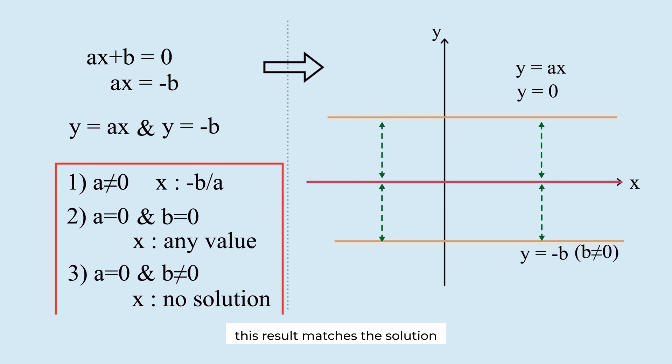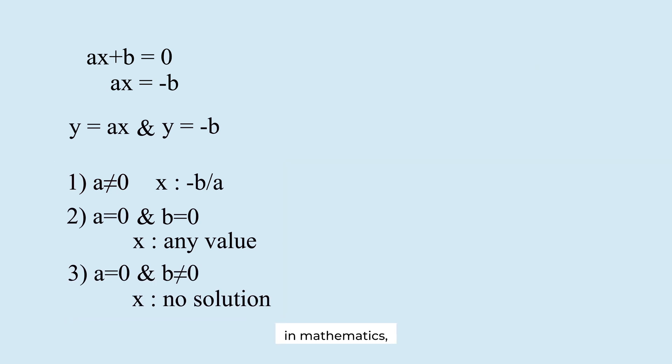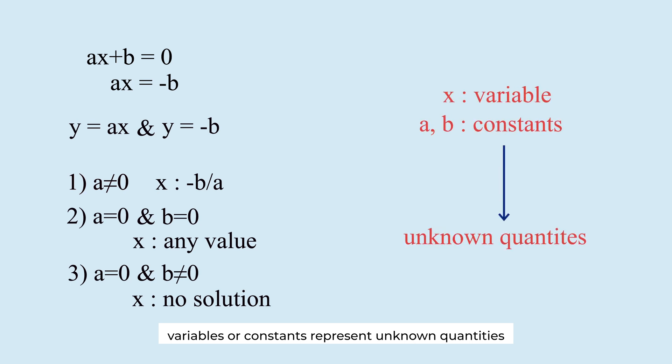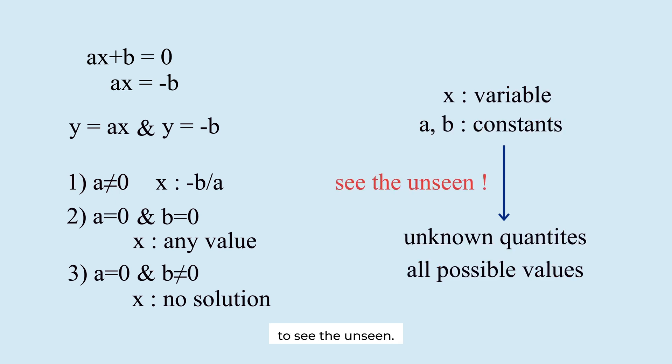This result matches the solution we derived algebraically. In mathematics, variables or constants represent unknown quantities that cover all possible values unless conditions are given. Don't just see what's visible. Use mathematics to see the unseen. Thank you.